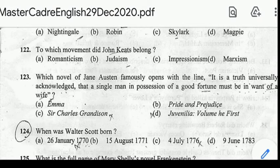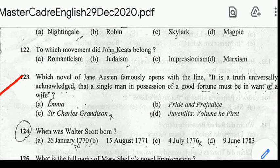Number 122: to which movement did John Keats belong? Correct answer: option E, Romanticism. Number 123: which novel of Jane Austen famously opens with the line, 'It is a truth universally acknowledged that a single man in possession of a good fortune must be in want of a wife'? Correct answer: option B, Pride and Prejudice.